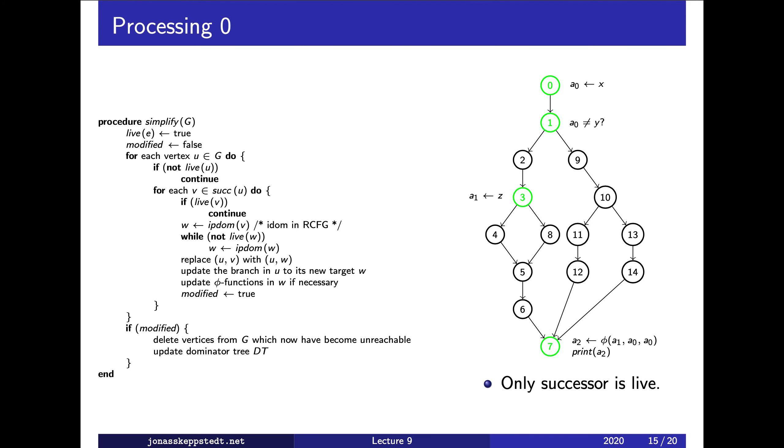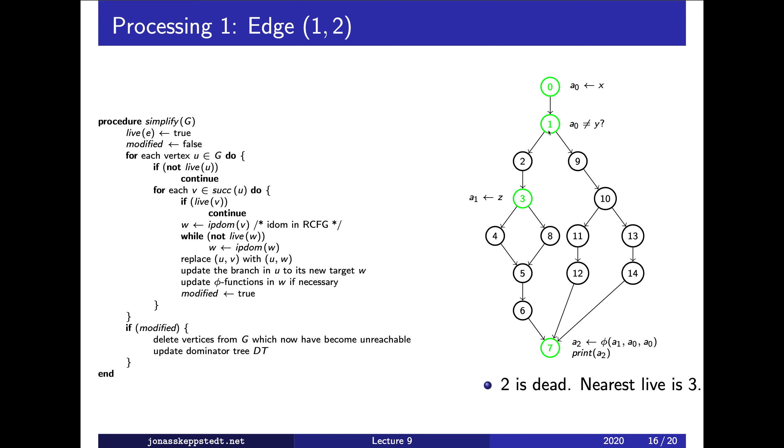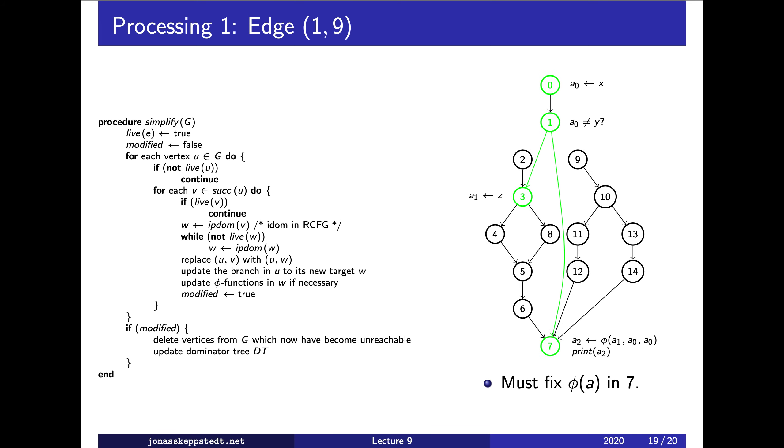Let's see what happens. When we process vertex zero, the only successor is live, so we don't do anything. Then we look at edge one to two. Two is dead, so we follow the post-dominator tree up from two to three and make the branch go there instead.